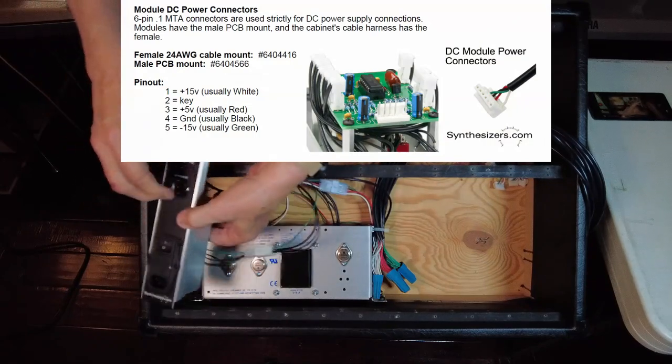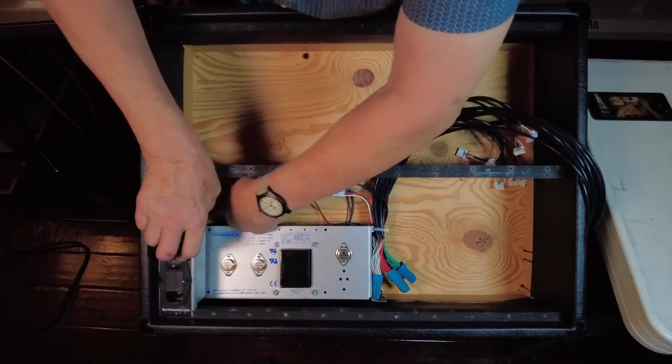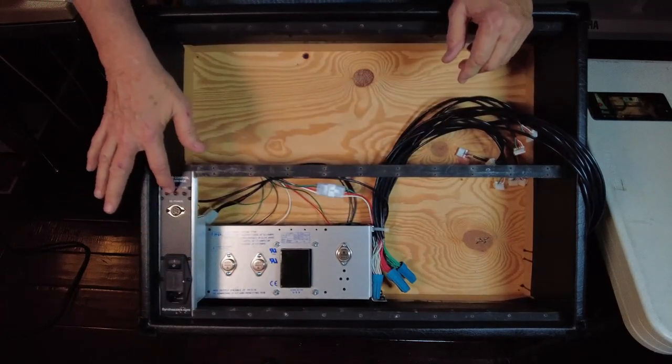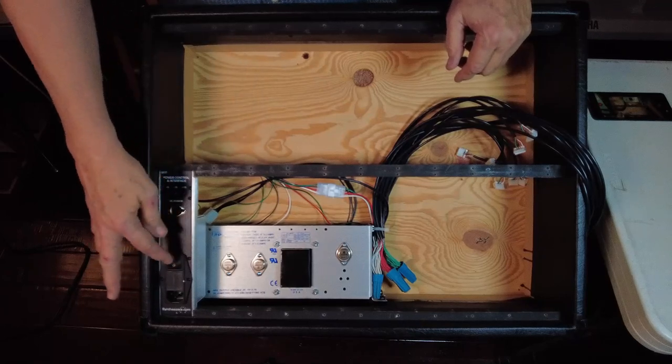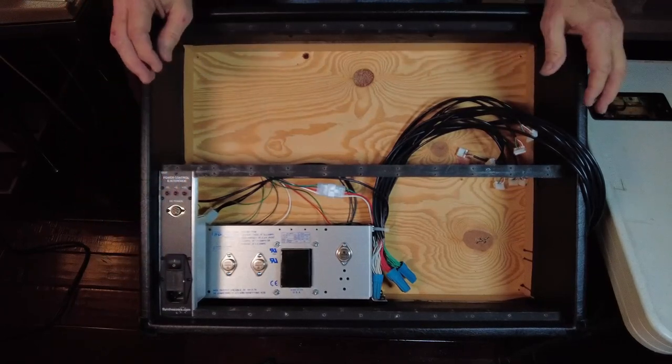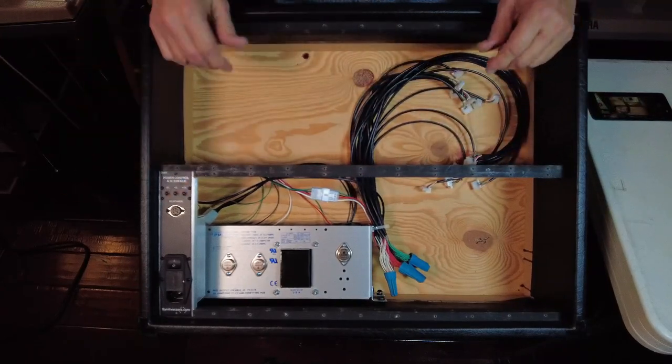Now what that does is there is a set of status lights up here at the top. Plus 15, minus 15, and plus 5. And so whenever you power it on, these light up if the power supply is functioning correctly. That's always good to know that those are on.